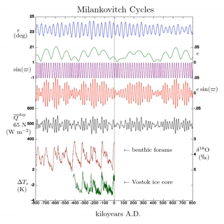In the 1920s, he hypothesized that variations in eccentricity, axial tilt, and precession of the Earth's orbit resulted in cyclical variation in the solar radiation reaching the Earth, and that this orbital forcing strongly influenced climatic patterns on Earth.